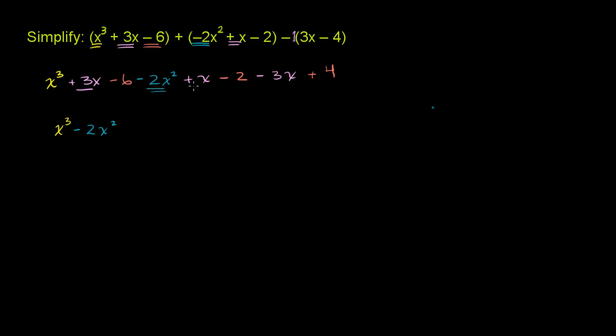We have a 3x plus an x minus a 3x again. So that 3x minus the 3x will cancel out, and you're just left with an x. So plus x. And then finally, our constant terms. Negative 6 minus 2 plus 4. Negative 6 minus 2 gets us to negative 8, plus 4 is negative 4.